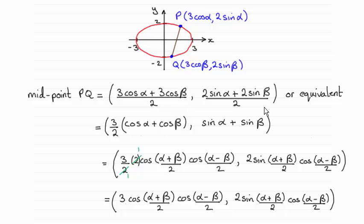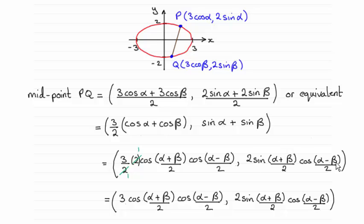But I've gone on and given an equivalent answer because you're going to need it later on. So what I've done here is I've just pulled out the 3 over 2, and then I can use the factor formula on cosine of alpha and cosine of beta, which is down here, and simplify it. And I've also used the factor formula on sine alpha plus sine beta, as you can see here.